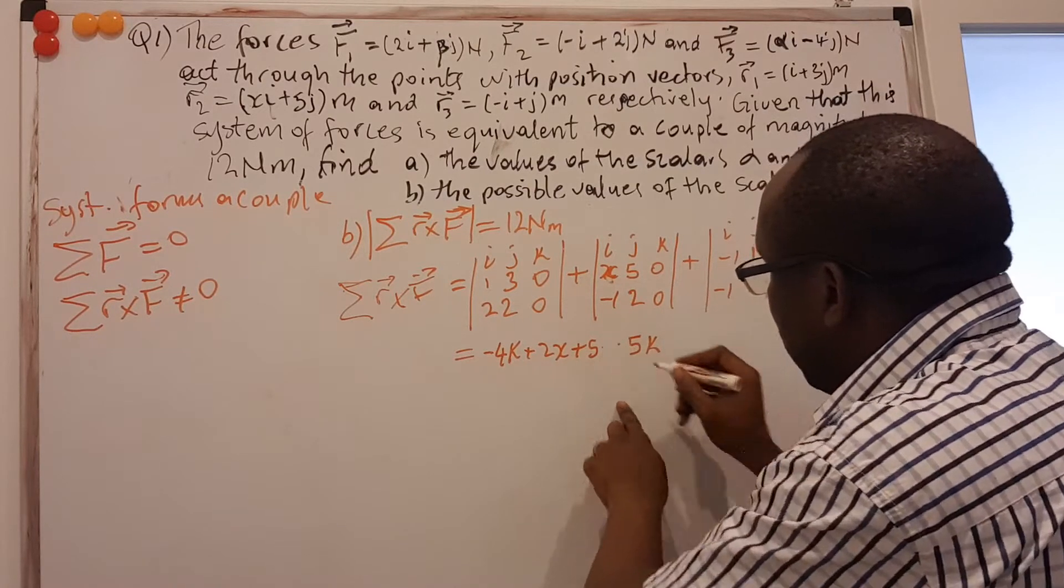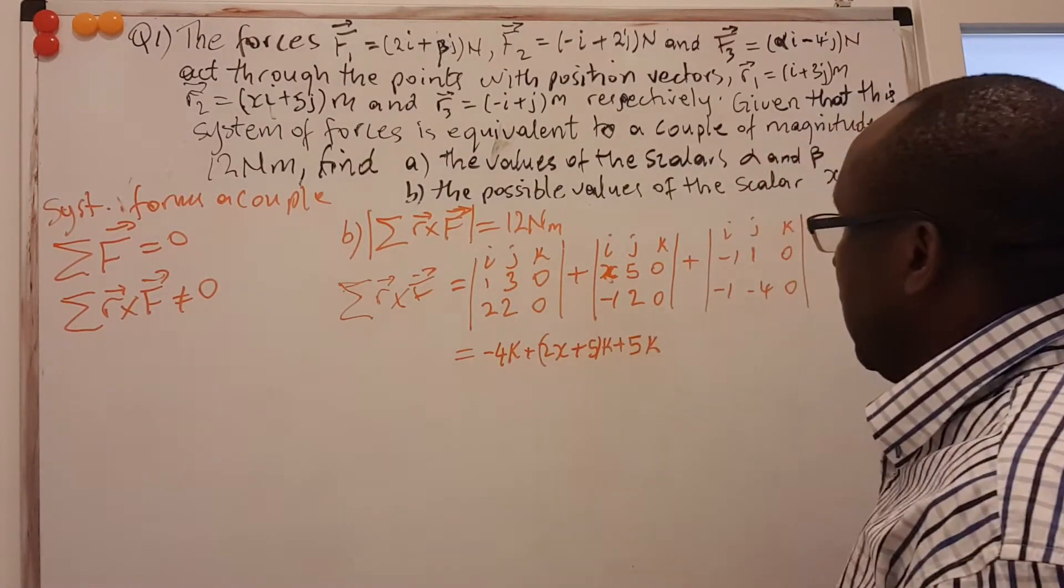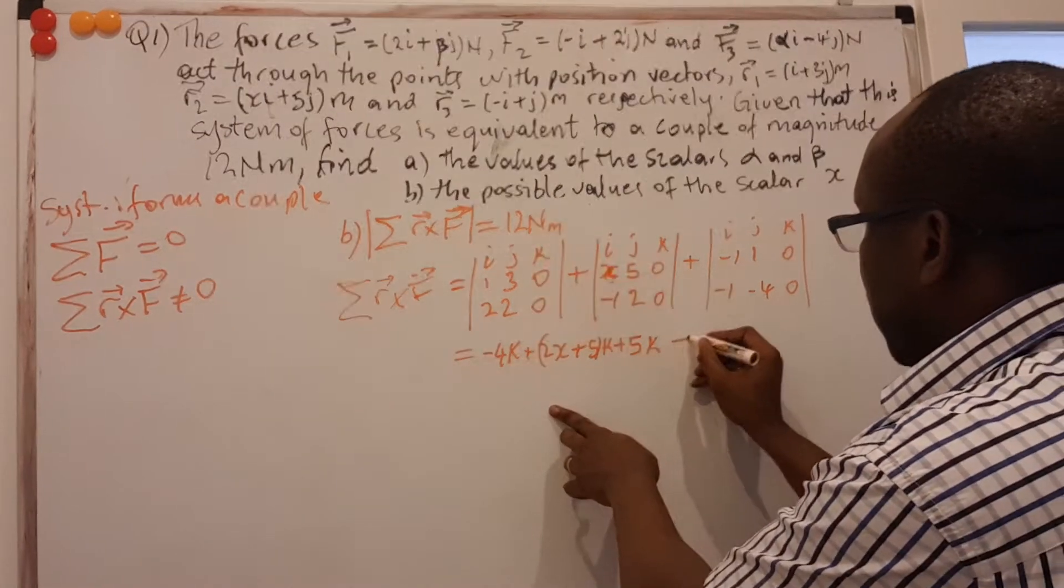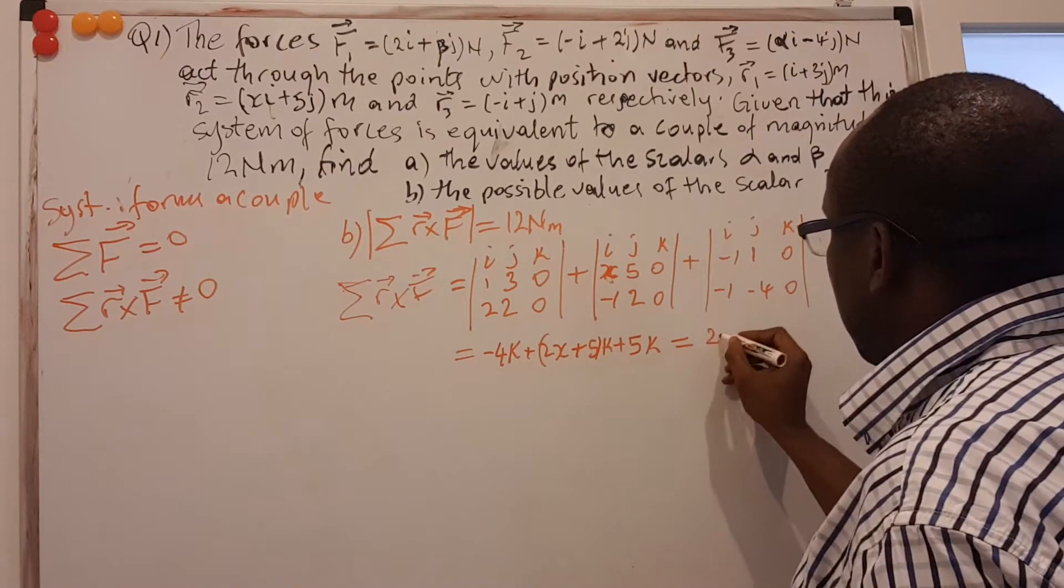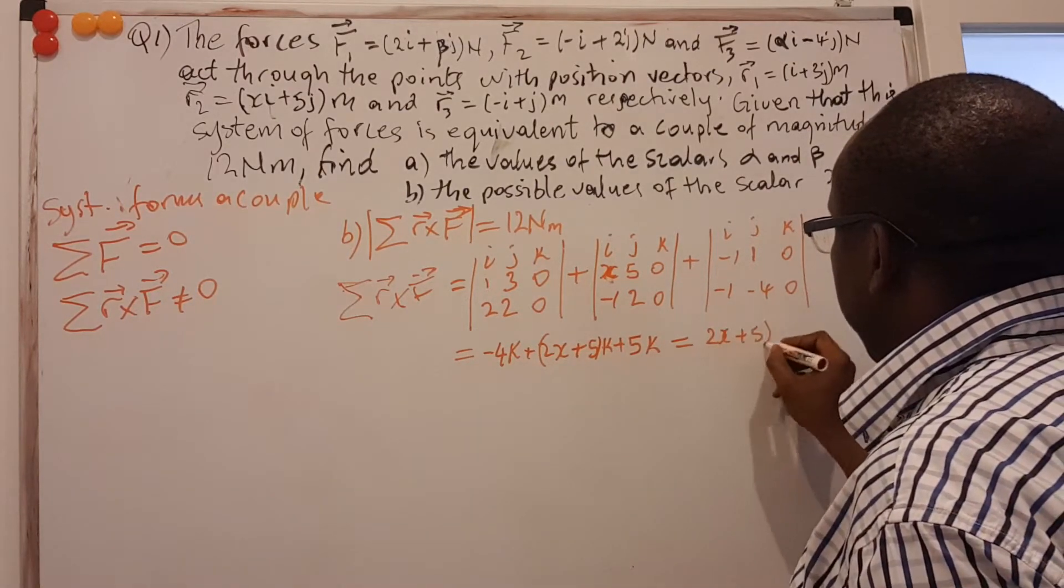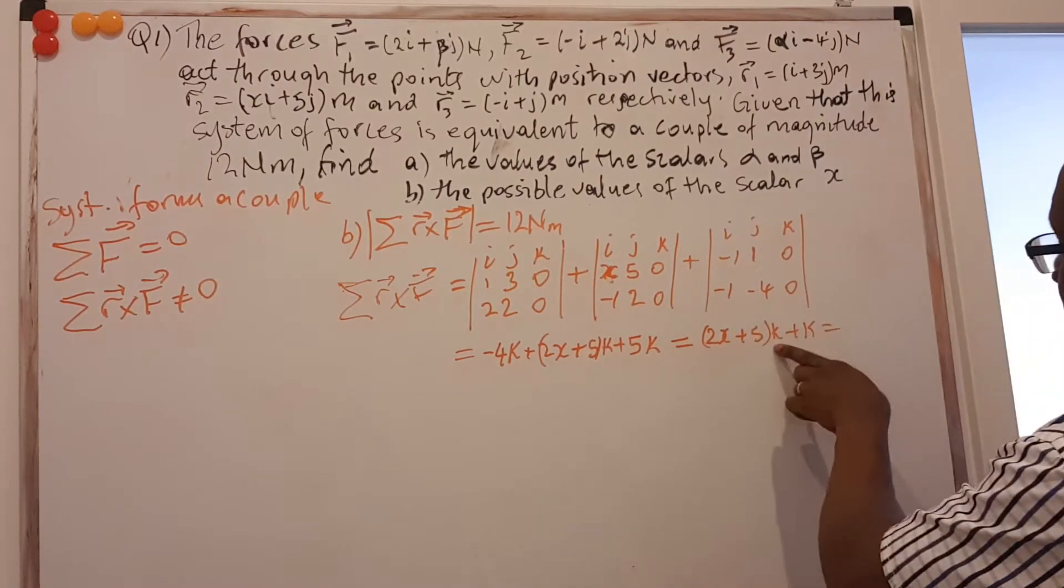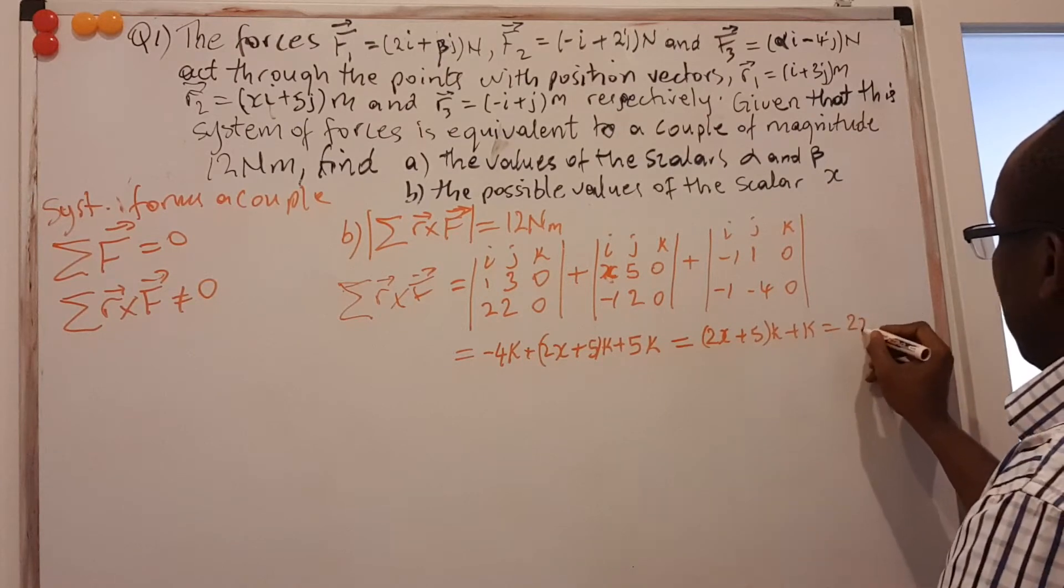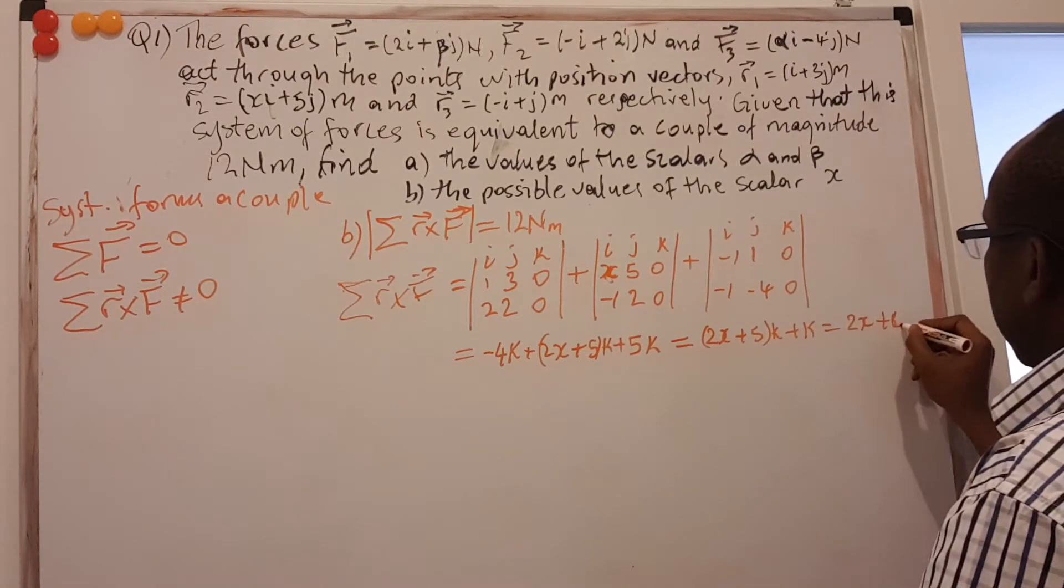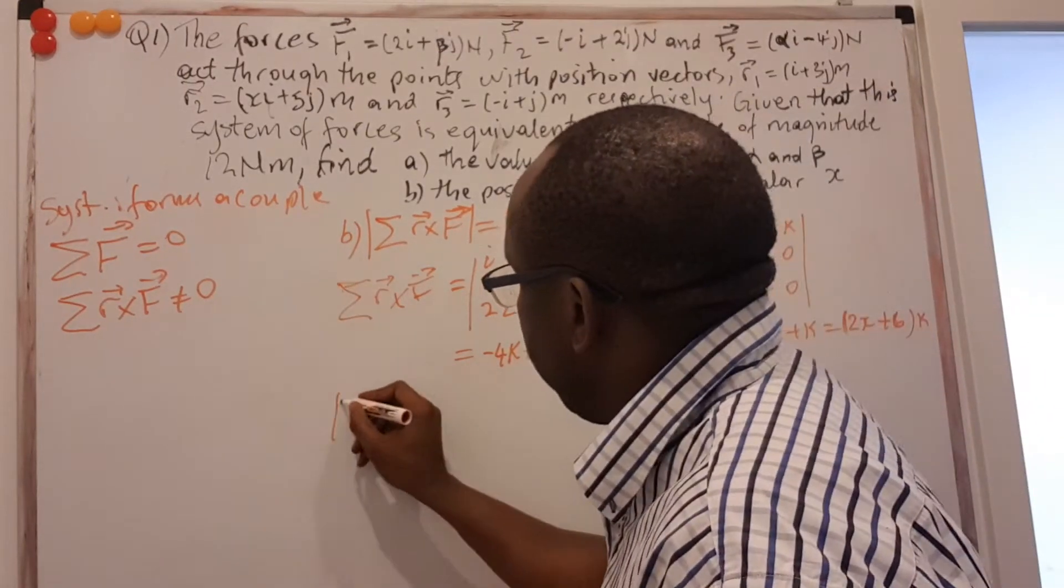Sorry, there's a k here as well. So if I arrange that well, you see that the 5k and -4k is just 1k over. So this is 2X + 5k + k. I can take the k outside. I'm going to get one sum. So this is simply (2X + 6)k. So I'm left to look for the magnitude of that.